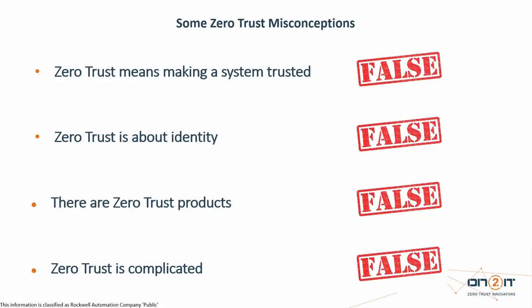And then there are Zero Trust products - that is not true. There are products that work well in Zero Trust environments, but Zero Trust is a strategy designed to stop data breaches and make other cybersecurity attacks unsuccessful. It's a strategy that uses products. And then Zero Trust is complicated - not true. There are nine things you need to know to understand and do Zero Trust.